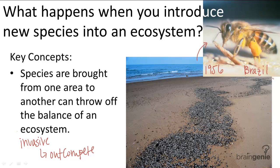These African honeybees were particularly aggressive, but it was okay because they were supposed to be contained in the lab where they were trying to breed this new bee. However, the honeybees accidentally escaped, and they ended up being very dangerous and spreading throughout the Americas. By 2000, they had already killed 10 people in the U.S. from their so-called killer bee sting.